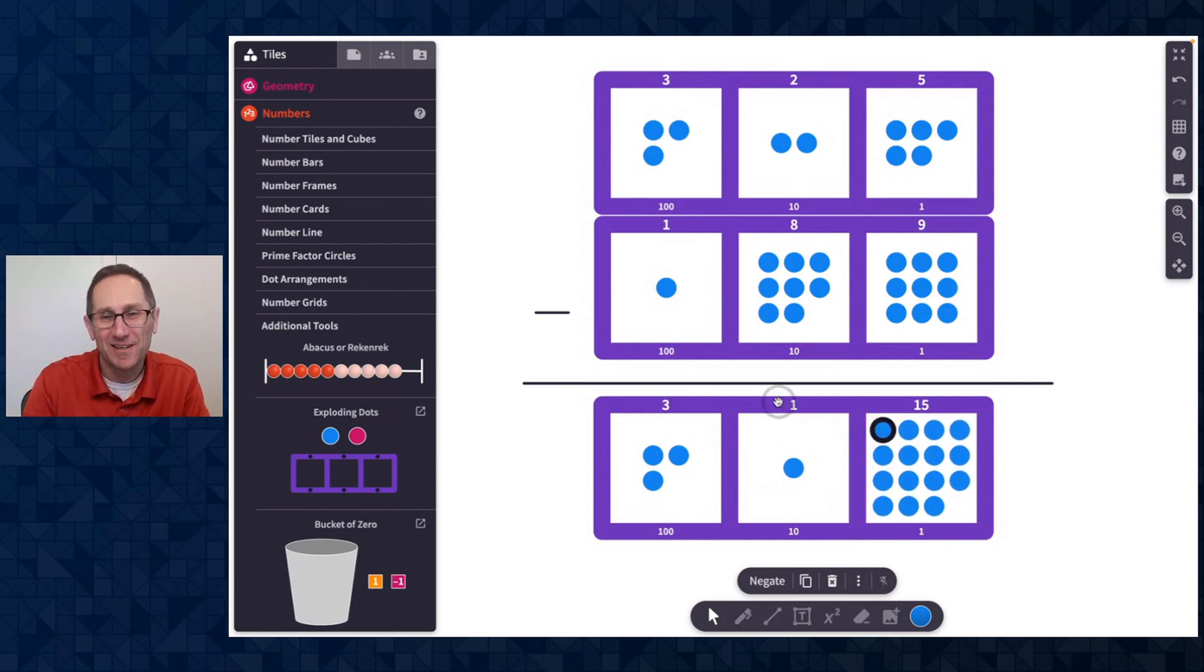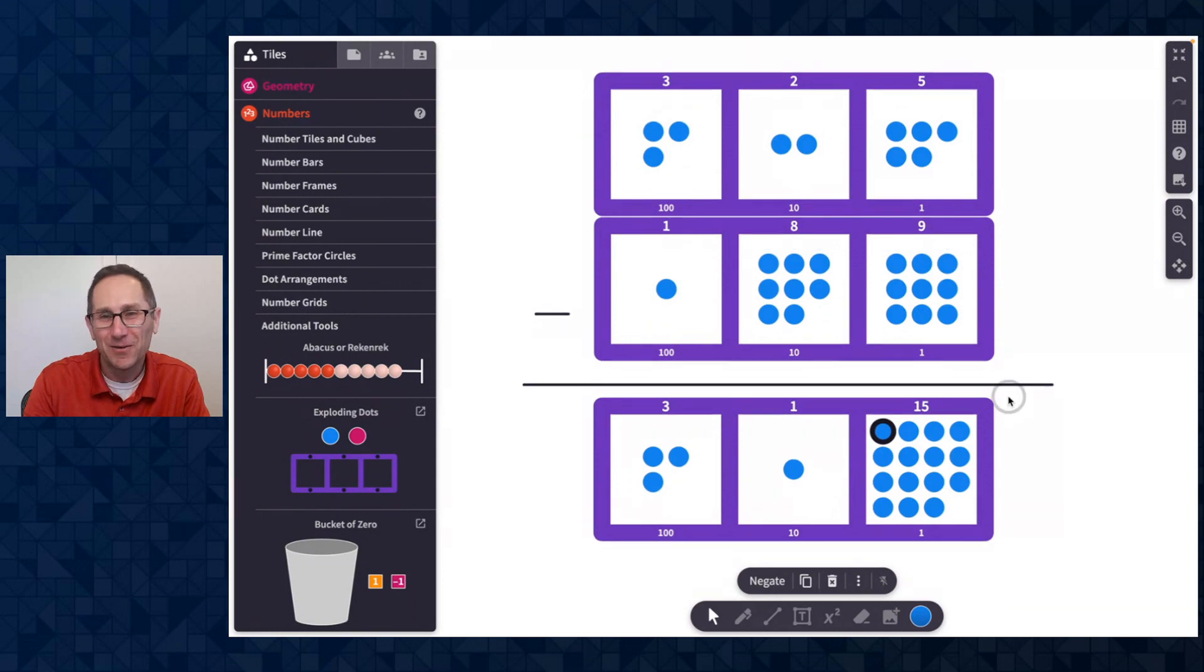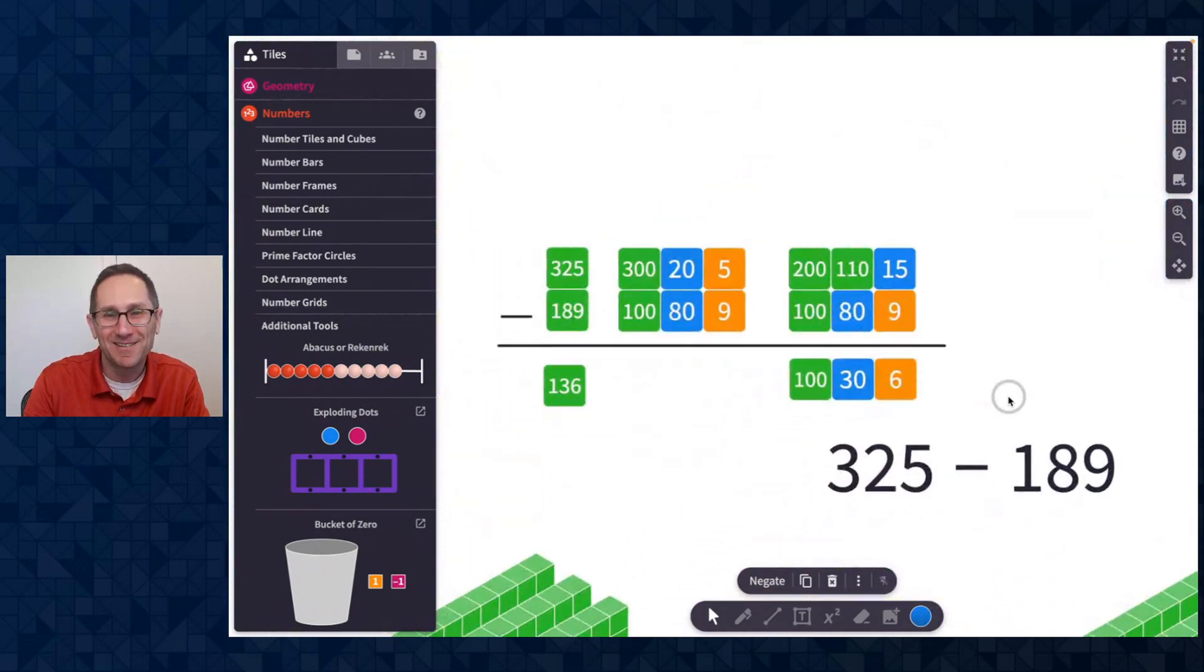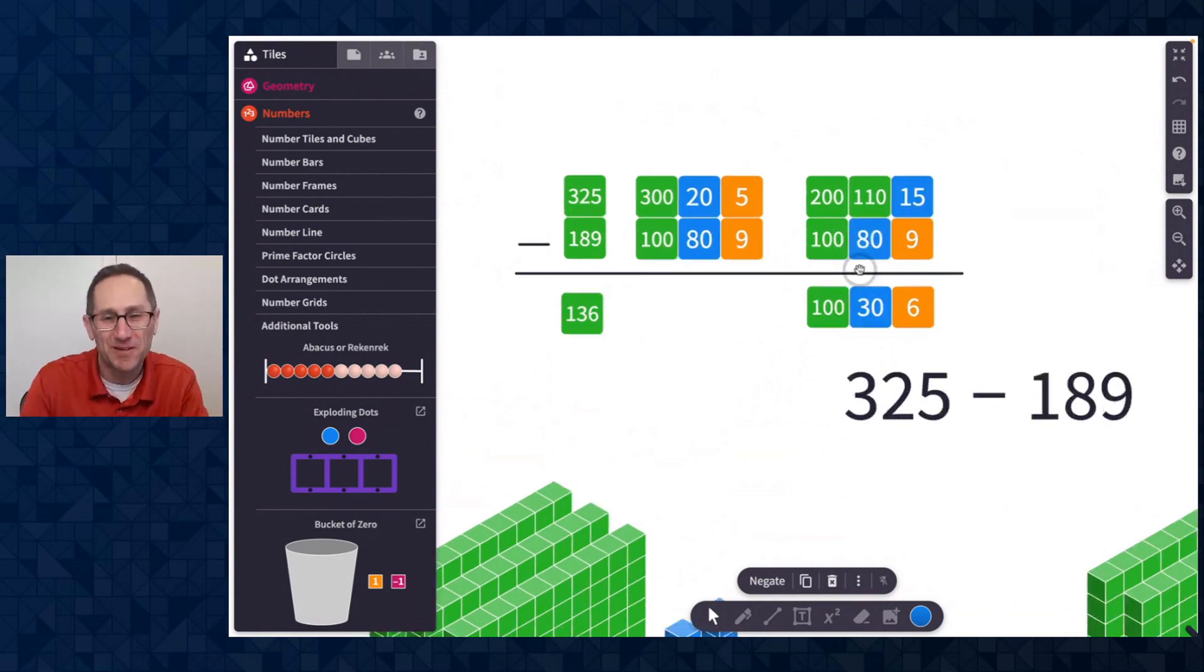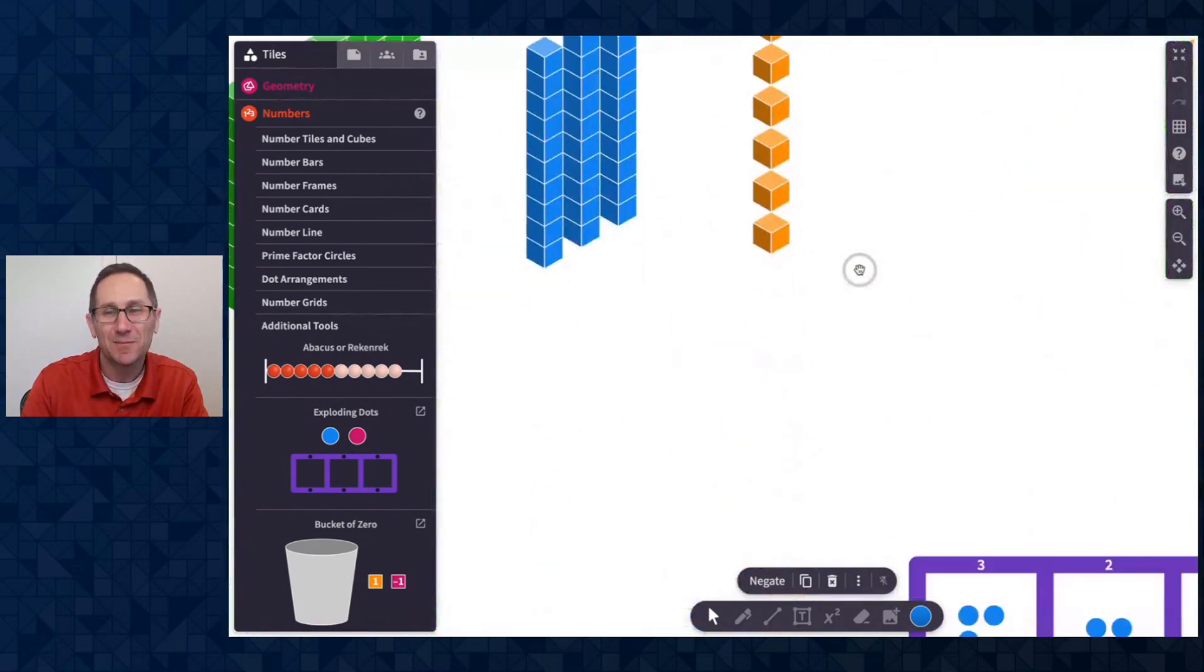So now I can see the three, the one, and the 15, which if I scroll all the way up here, there it is, right? There is the 15. So nice connections between all these representations. Let me go back down here.